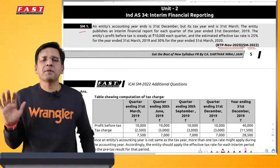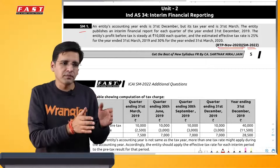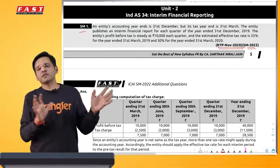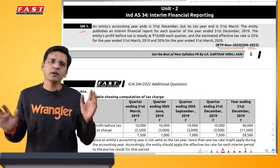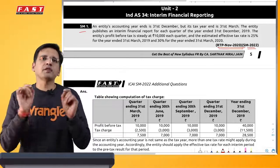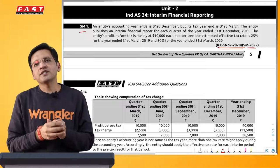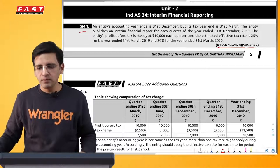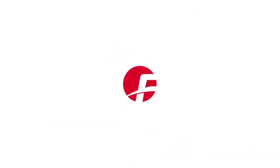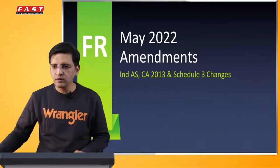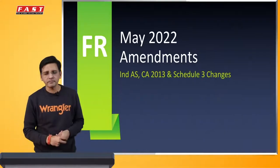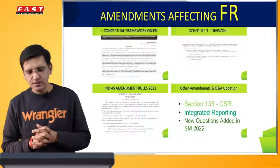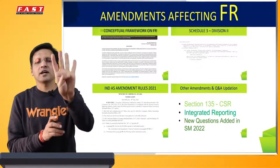Having said all this - ab iske basis pe, now we know ki institute ne material mein jo changes kiye hain, wo hamein kahan kahan pe, kaun-kaun se pages ya kaun-kaun se questions karne se, wo saare changes cover ho jaayenge. Ab iske baad ek doosra sawal hota hai ki changes actual mein hue kya hain - yeh to institute ke module ko refer karne ka tarika ho gaya. Now let us come to what are the kind of changes which the institute has done. Moving on to the changes - primarily dekho, amendment jaisa maine aapko bataya, uske primarily aap dekhenge to chaar kaaran hain.